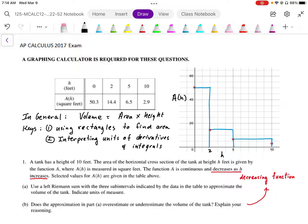Some of the keys that are being tested here are that we'll be using rectangles to find area, or Riemann sums. And secondly, we want to be able to interpret the units of the derivatives and integrals. These are some key ideas that are being tested here.